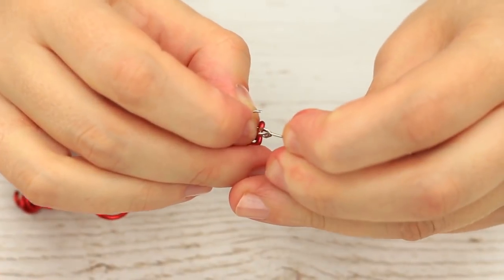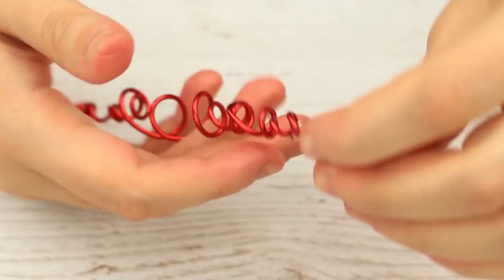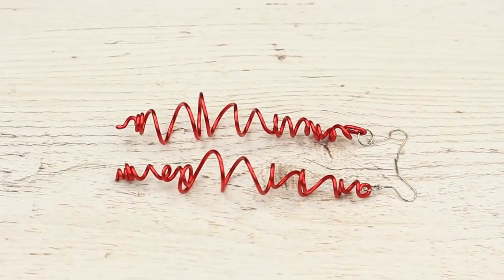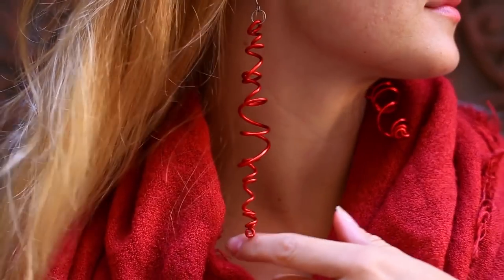Open jump rings and put on the loops. Fasten French hooks and close the rings. The delicate long spiral earrings will attract attention with their magnificent shape.